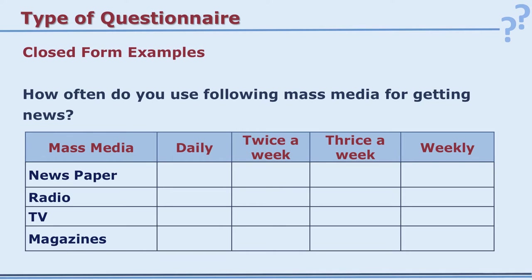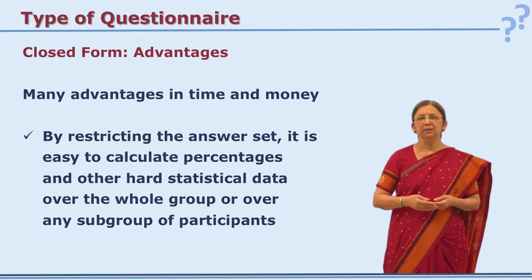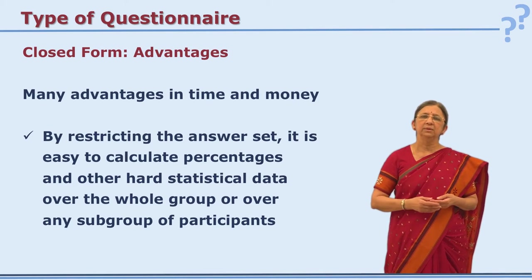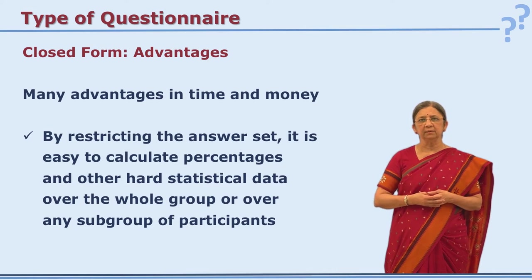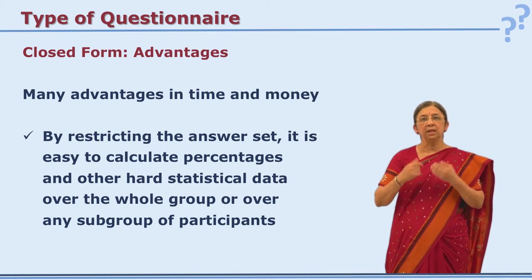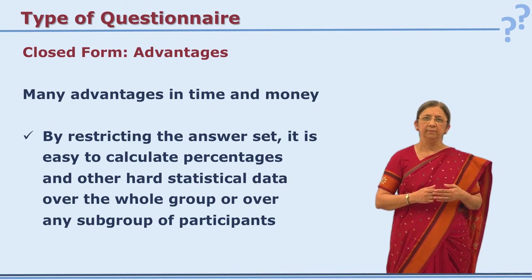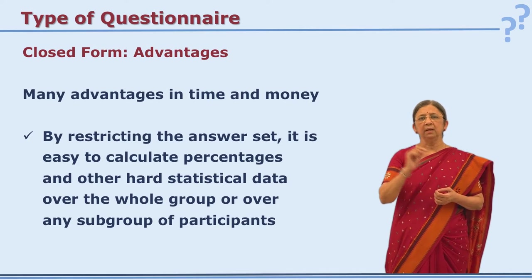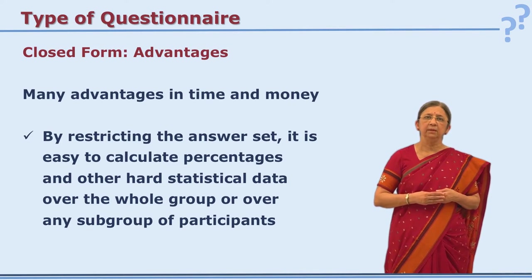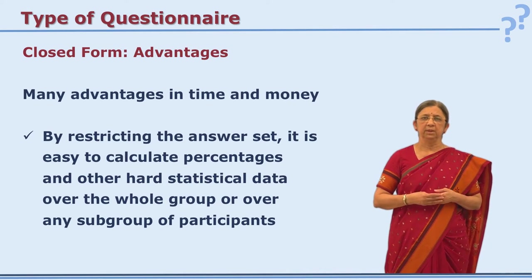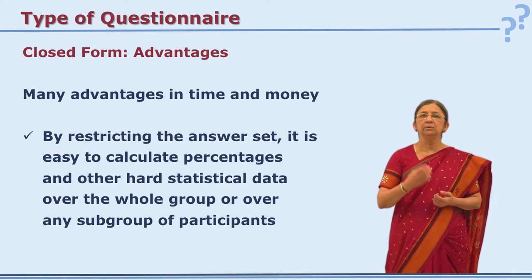The advantages of closed form: it is not time consuming and saves both time and money. Your time is saved on analyzing, tabulating, and coding because the alternatives are already ready and coded. Only the code number needs to be entered. Analysis of percentages, standard deviation, and mean can be done quickly because you have the scores in hand.